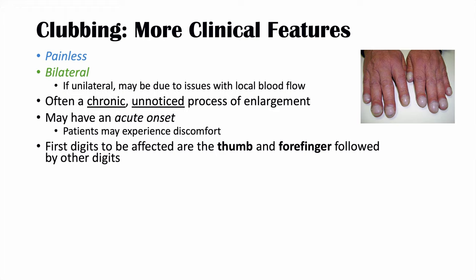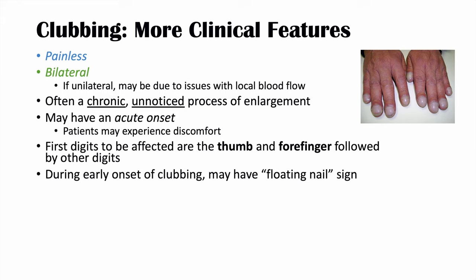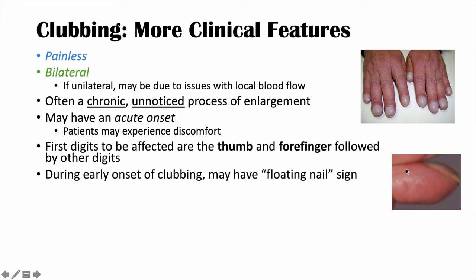The first digits to be affected are typically the thumb and forefinger, then other digits follow. As clubbing progresses, during early onset there may be something called the floating nail sign. In early clubbing, we start to see some change in the nail's angulation. If you push down on the edge where the nail meets the skin, it can actually be pushed down — it feels like it's floating. A normal nail doesn't move, and a completely clubbed nail doesn't move either; only the early clubbing nail moves slightly.